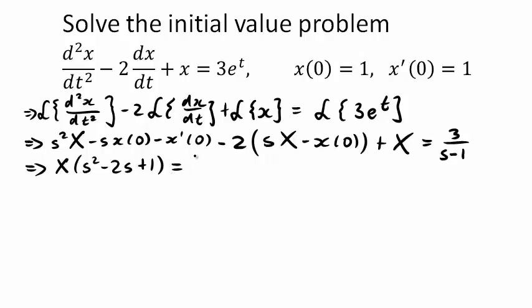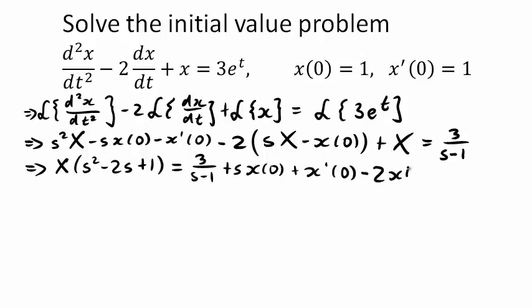The right-hand side starts with 3 over (s - 1). Adding the remaining terms: plus s·x(0) plus x'(0), and inside the brackets there was a minus 2 times minus x(0), which gives plus 2x(0), so bringing it to the right-hand side becomes minus 2x(0).